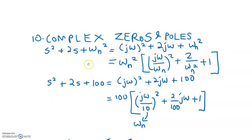If we have a complex function — either at the numerator for zeros or at the denominator for poles — please do not factorize. Just leave it as this second-order polynomial function. We replace S with jω to convert into the frequency domain and rearrange until we get plus 1 at the end. To achieve this, we divide by 100, and be careful — since the S term is squared, divide by 10. So 10 squared becomes 100. Multiply the function by 100 to get the same equation. This is the natural frequency, or in complex numbers, the natural frequency ωn — which is actually the cutoff frequency.